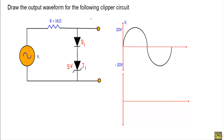Draw the output waveform for the following clipper circuit. For this given clipper circuit, we have to draw the output waveform. We will take the output across this terminal to this terminal. In this circuit, we are applying input voltage with a positive peak of +20V and negative peak of -20V. We will assume the built-in potential of diode D1 equals 0.7V, and the built-in potential of Zener diode Z1 equals 0.8V.